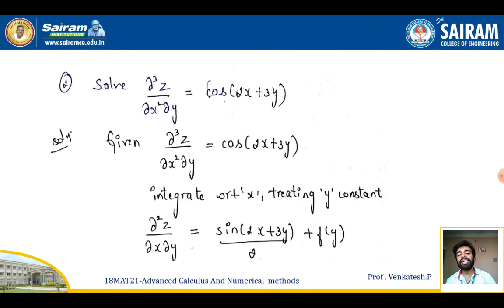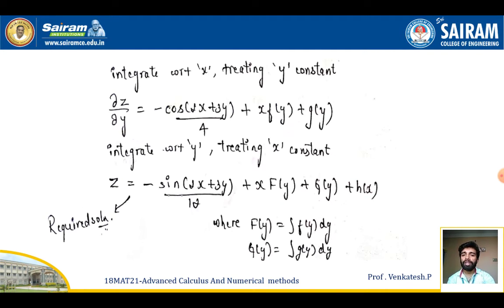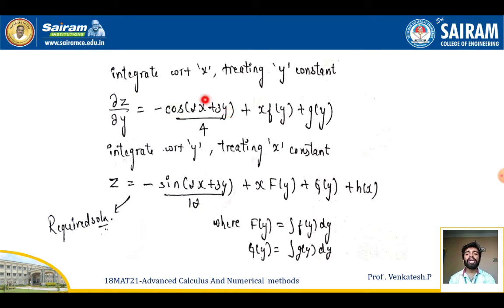Again integrating with respect to x, I get ∂z/∂y = −cos(2x + 3y)/4, since integrating sine gives minus cosine and the factor 2 multiplied with x gives 4 in the denominator.